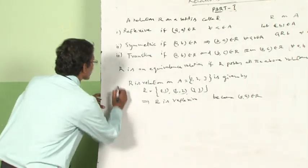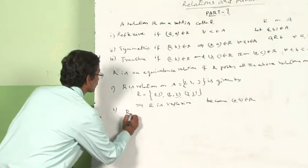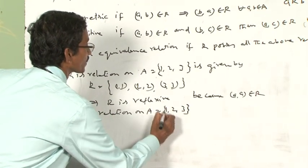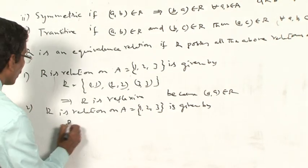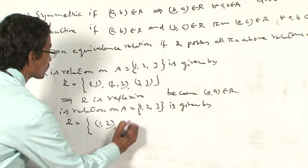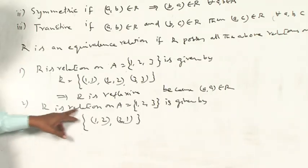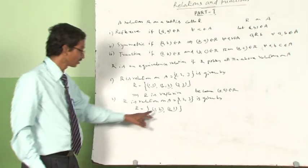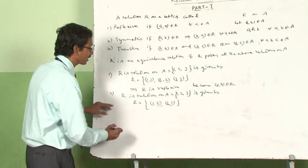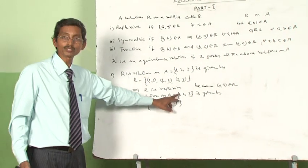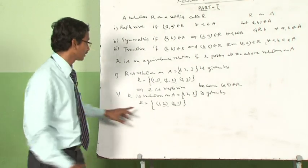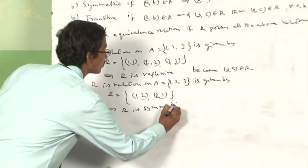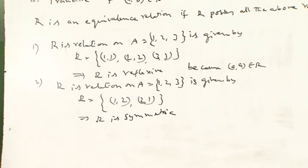Another example: a relation R on a set A = {1, 2, 3} is given by R = {(1,2), (2,1)}. This is a symmetric relation, because for every A comma B belonging to R, B comma A also belongs to R — here (1,2) and (2,1) are both in R. However, it is not a transitive relation and it is not a reflexive relation.